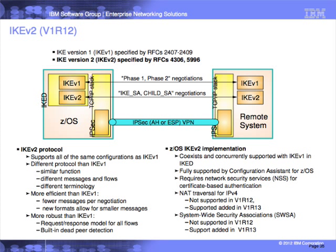IKE V2 is a different protocol than IKE V1 — similar but using different terms and flows. Our implementation speaks both IKE V1 and IKE V2. For NAT traversal or system-wide security associations with SWSA support, you need to be on V1R13. In V1R12, we have IKE V2 support without SWSA.